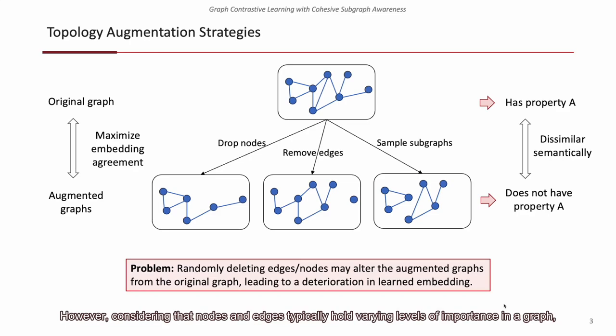However, considering that nodes and edges typically hold varying levels of importance in a graph, randomly deleting important nodes or edges can cause the augmented graphs to deviate significantly from the original graph, thereby degrading the learned graph embedding.